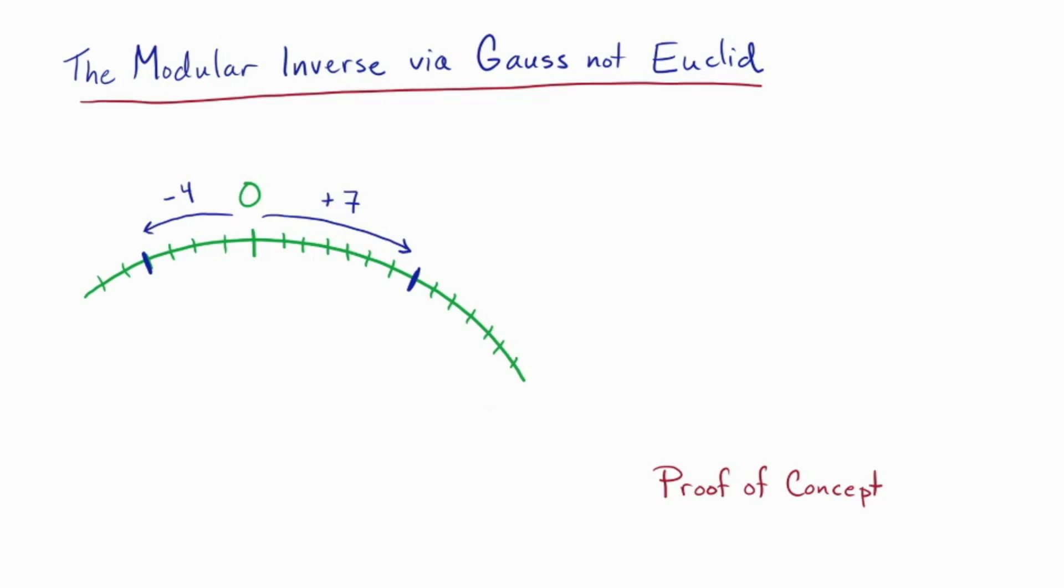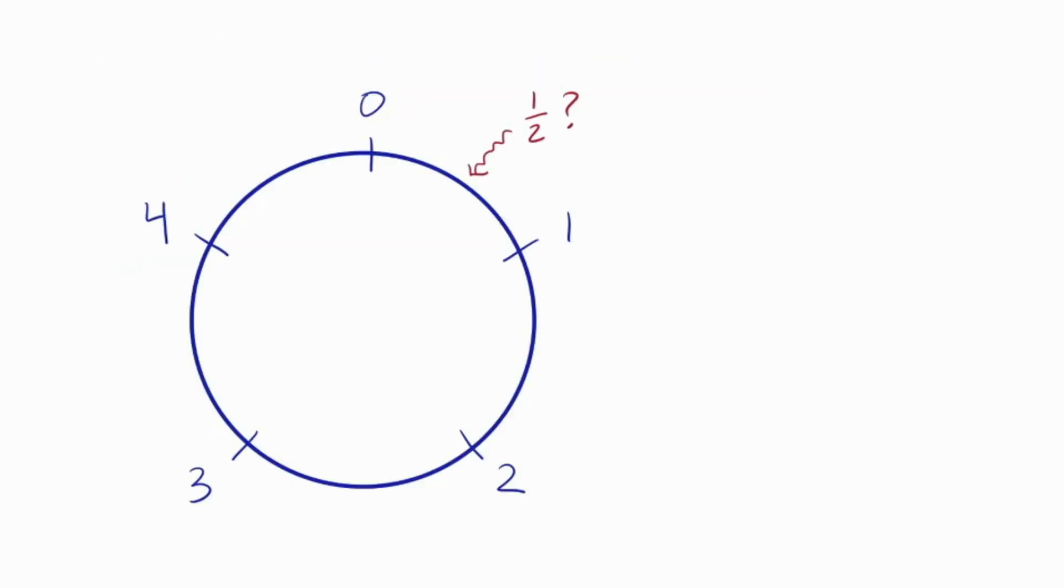Consider the question: what is one half mod five? We can't really talk about a half, the familiar rational number, because in the modular world we don't have anything between zero and one.